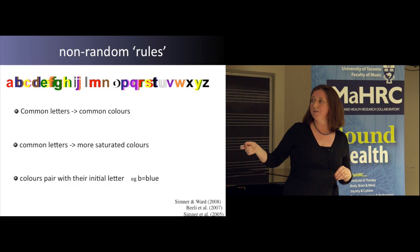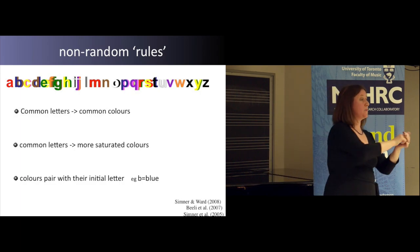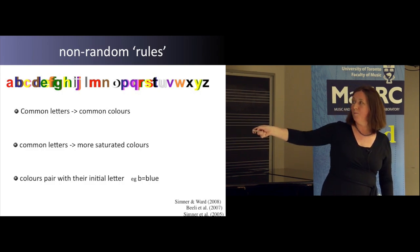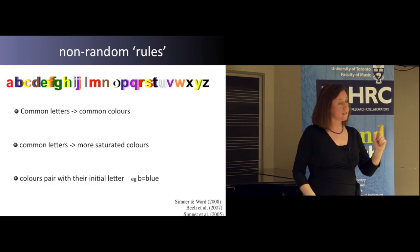There are these shared associations, and we wanted to know why. Why is A red? Why is S yellow? Why is X black? We ran statistical analyses to look for patterns and found a couple of rules. Letters that are more common — like A, E, and S — are more likely to pair with the more common colours. So A is likely to be red, whereas an uncommon letter like Q is likely to be purple or turquoise. That is a significant finding.